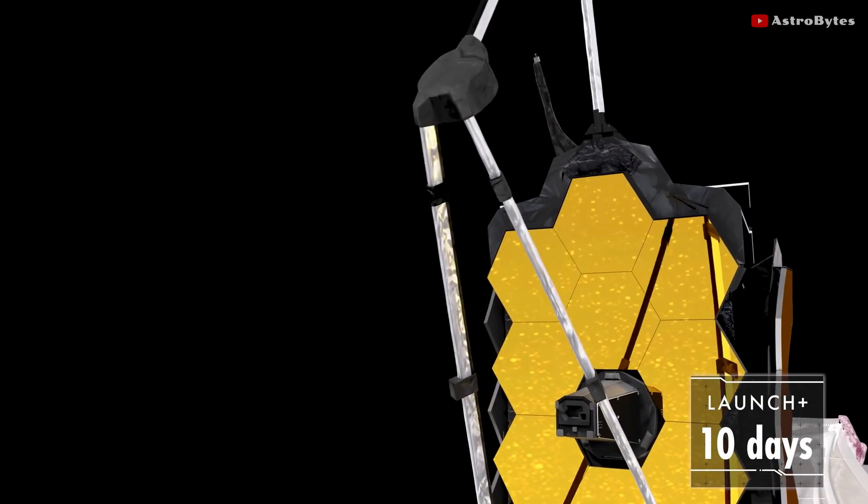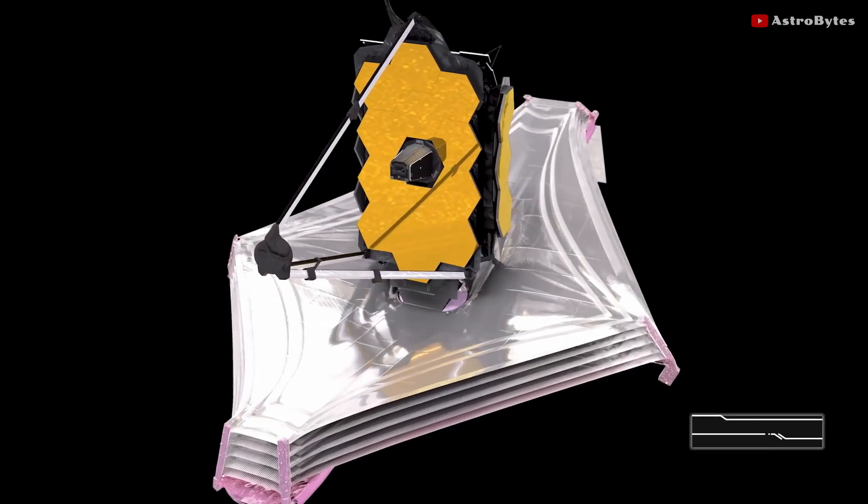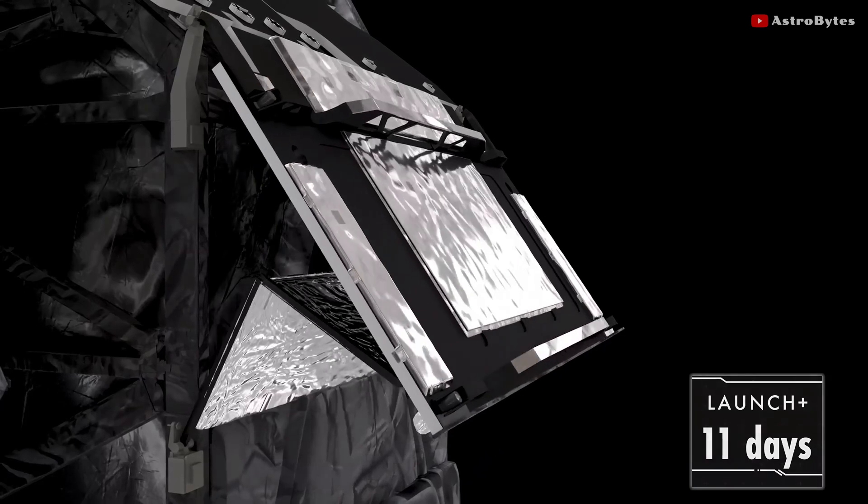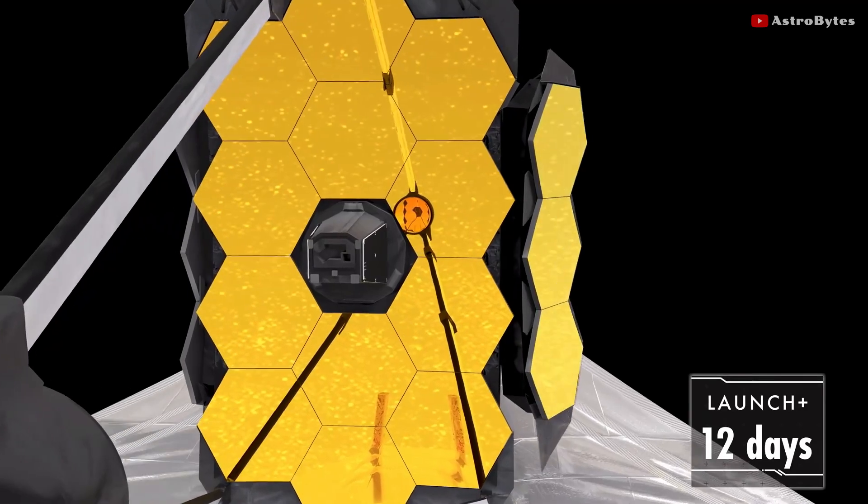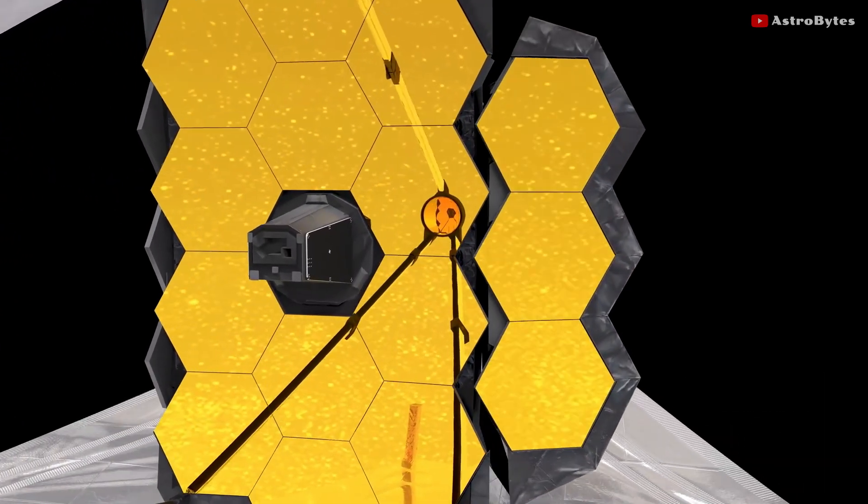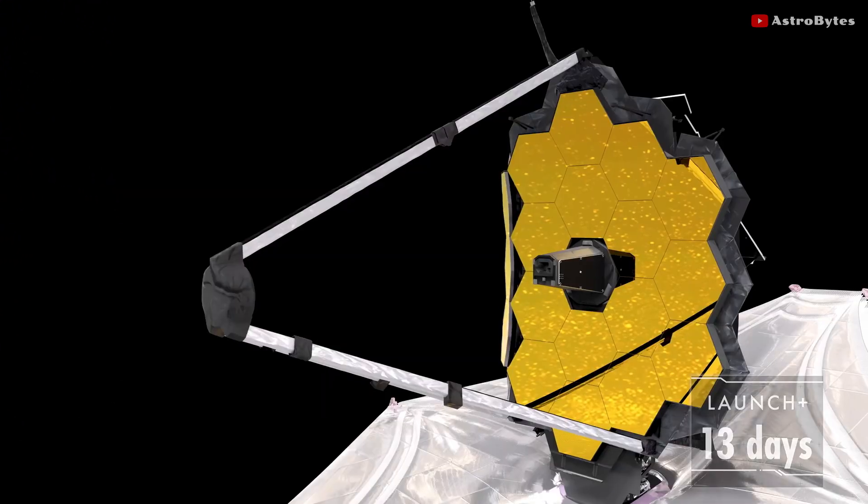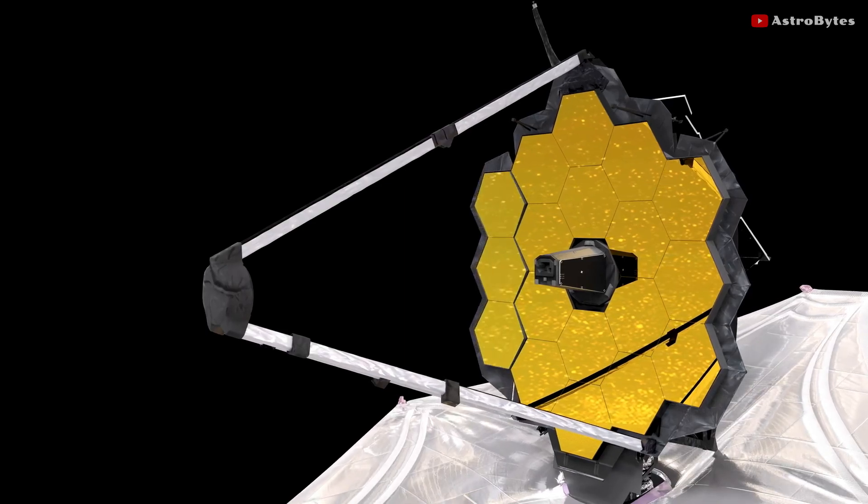Once the scientific instruments were cooled down enough to be operated safely, they were turned on and researchers began to calibrate them. The calibration of the mirrors is one of the most important tasks for the telescope. All 18 mirrors should be perfectly aligned if we want to take clear images.